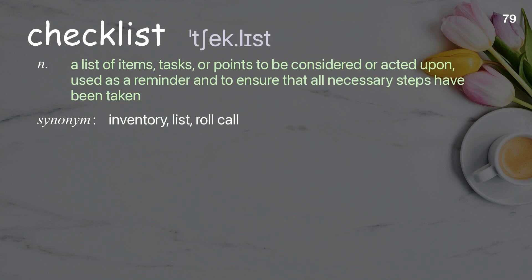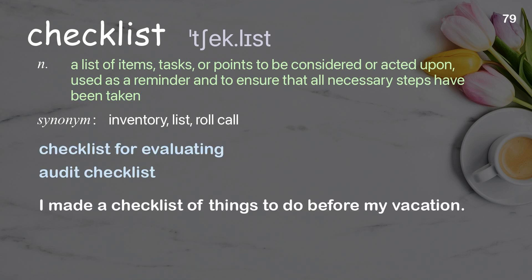Checklist: A list of items, tasks, or points to be considered or acted upon, used as a reminder and to ensure that all necessary steps have been taken. Examples: Checklist for evaluating. Audit checklist. I made a checklist of things to do before my vacation.